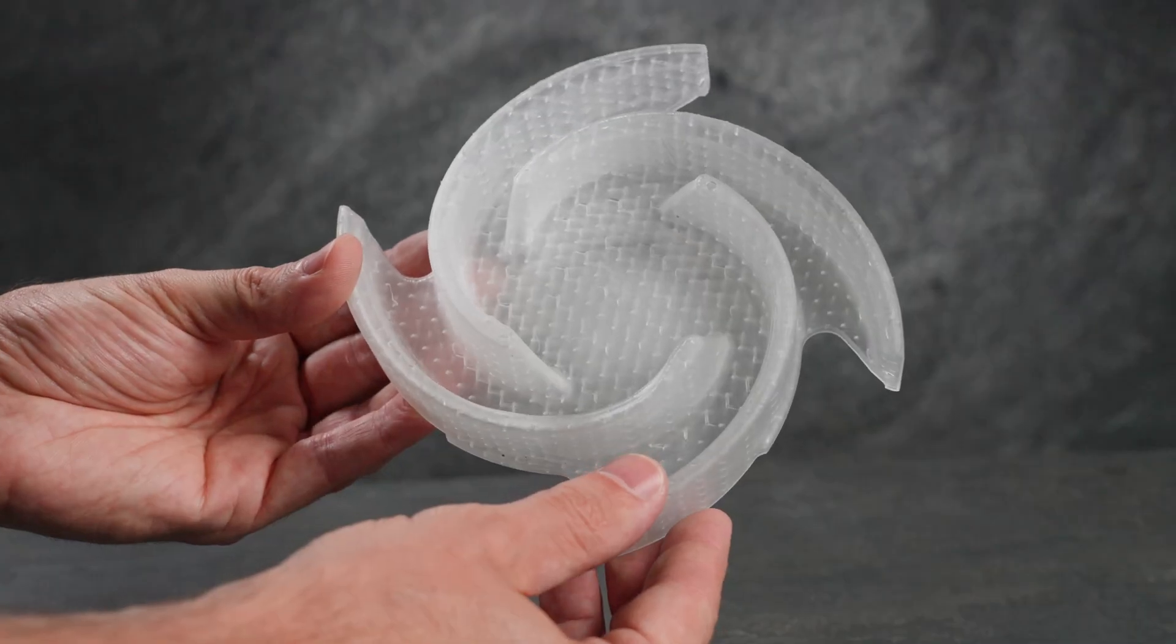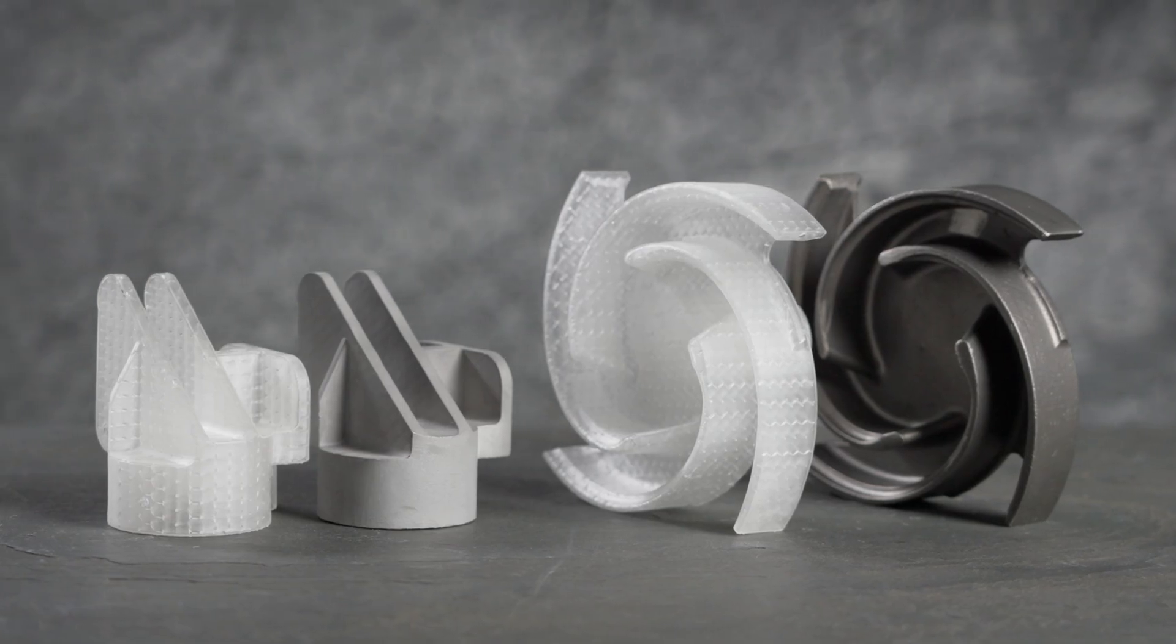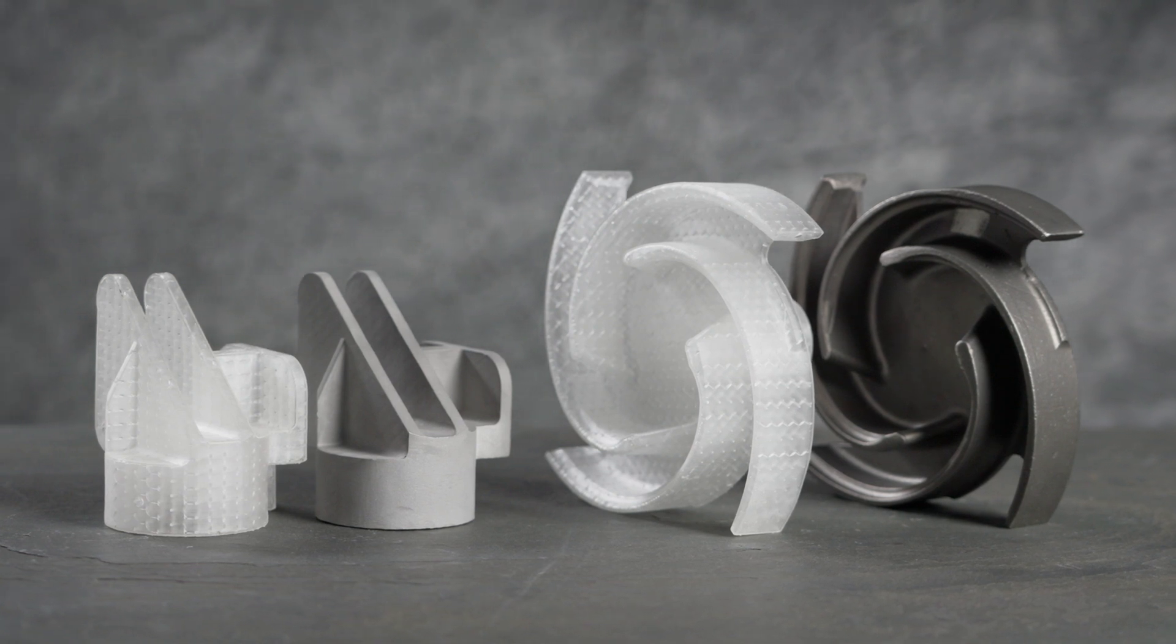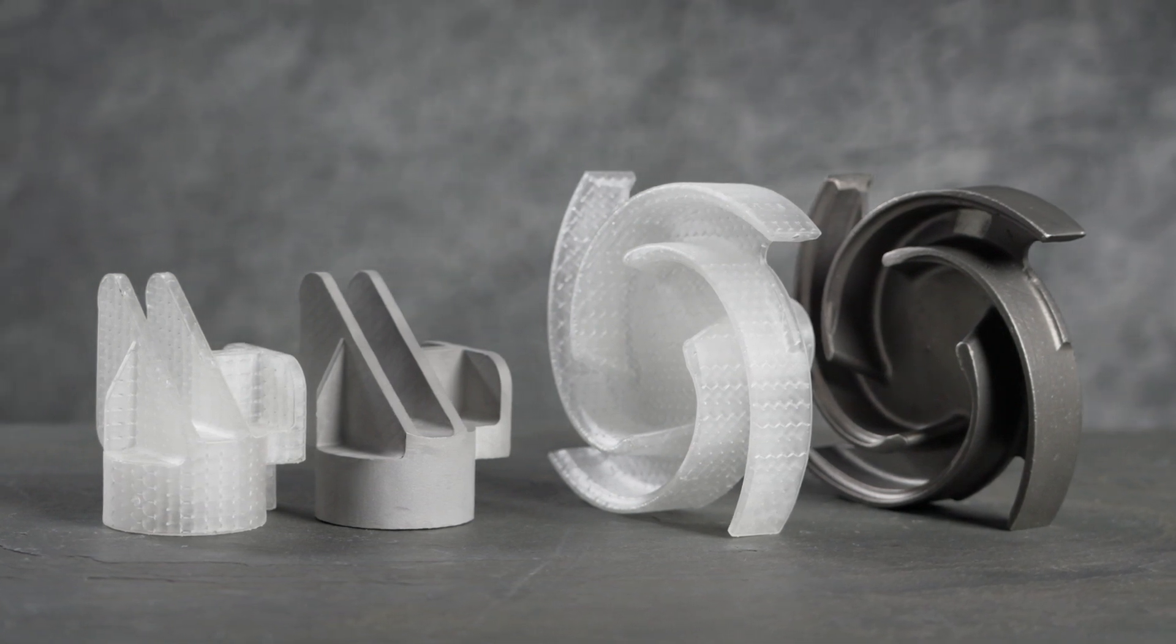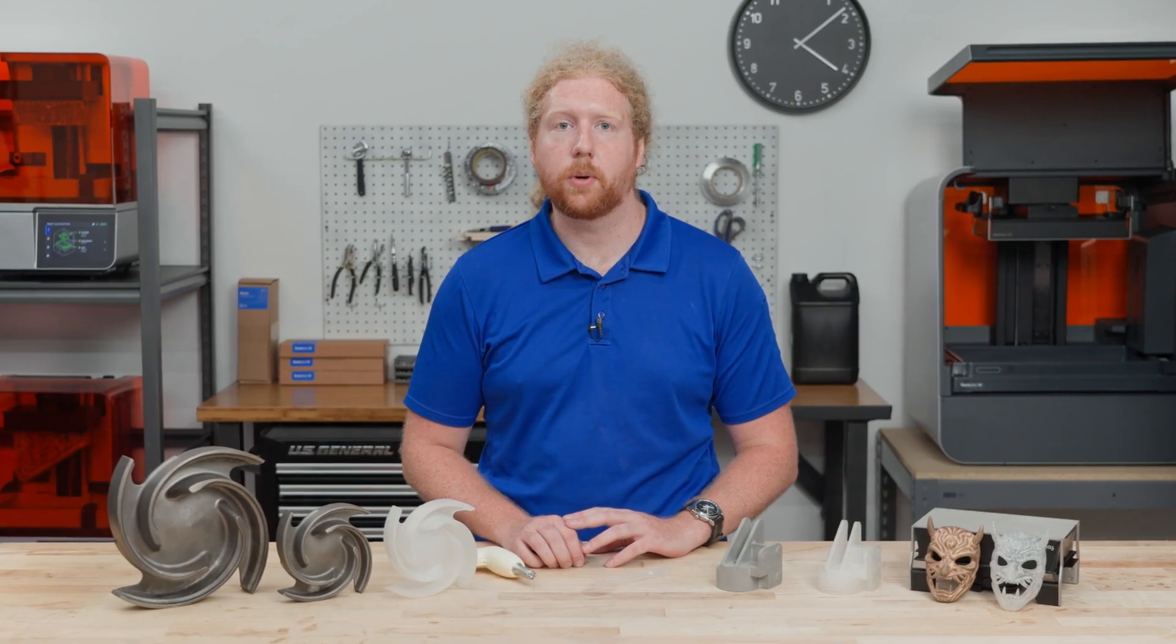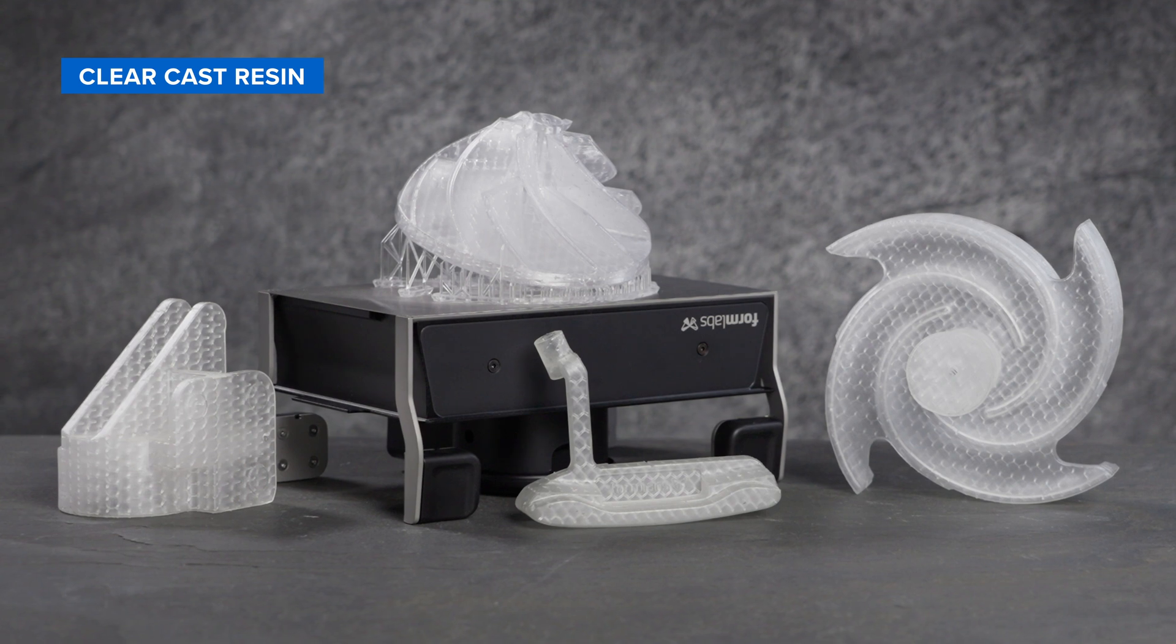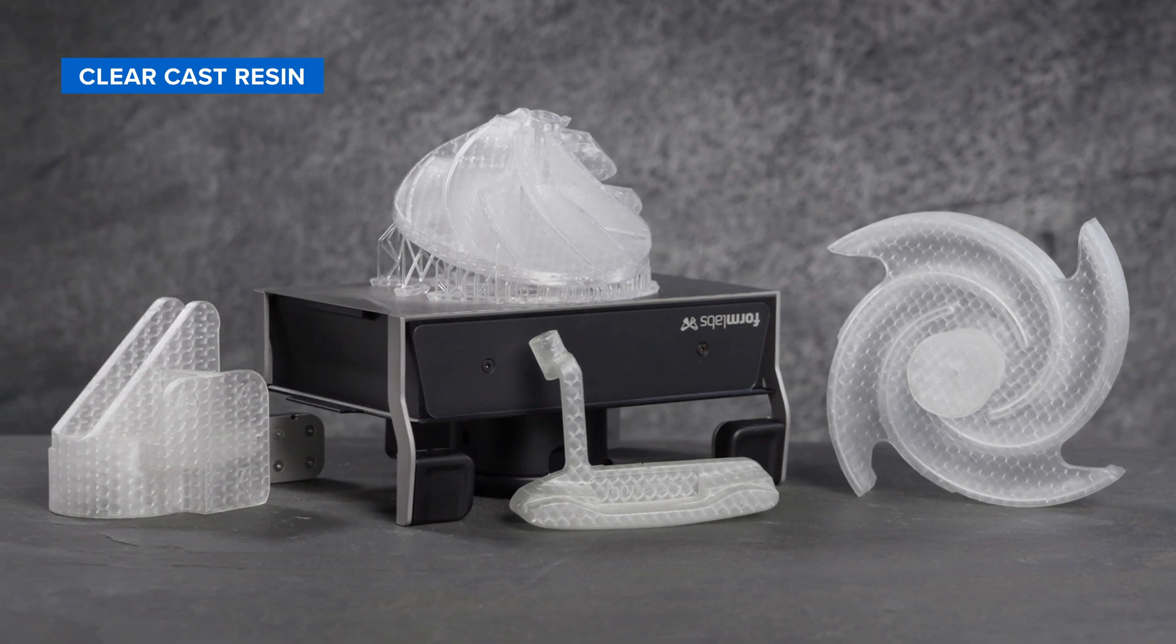Clear Cast resin, printed on Formlabs SLA ecosystem, enables printing ready-to-cast patterns at an affordable price point, with a workflow that easily integrates into your existing process. By producing patterns directly in-house with Clear Cast resin, foundries can iterate faster, save on tooling, and serve their customers better.